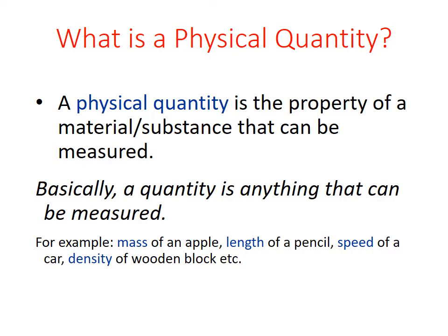What is a physical quantity? A physical quantity is simply the property of a material or substance that can be measured. Basically, a quantity is anything that can be measured. For example, the mass of an apple, the length of a pencil, the speed of a car, and the density of a wooden block. All of those are physical quantities.